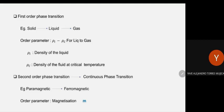To understand phase transitions, we need something called the order parameter. The order parameter is something which changes — around the phase transitional point — from one phase to another. In a continuous phase transition, determining the order parameter is much simpler than in a first order phase transition, where we have less understanding.